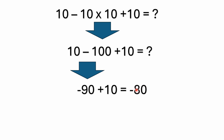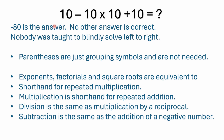You can also remember that since multiplication is shorthand for repeated addition, you could expand 10 times 10 and subtract 10 ten times: 10 minus 10 minus 10 minus 10 minus 10 minus 10 minus 10 minus 10 minus 10 minus 10, then finally plus 10 — and you still get negative 80. This relationship between multiplication, division, addition, and subtraction is nothing new. Some people say "I was just taught to go left to right," which is incorrect — no textbook ever taught that.